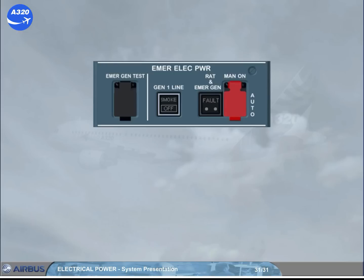The controls and indications on the emergency electrical power panel will be covered in the failure cases module, except for the emergency generator test switch. It is used by maintenance only to test the emergency generator and the static inverter.